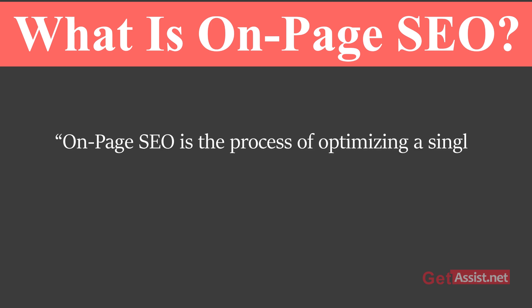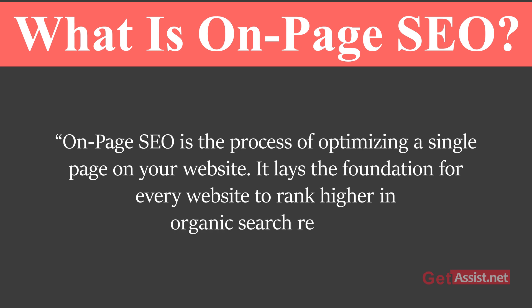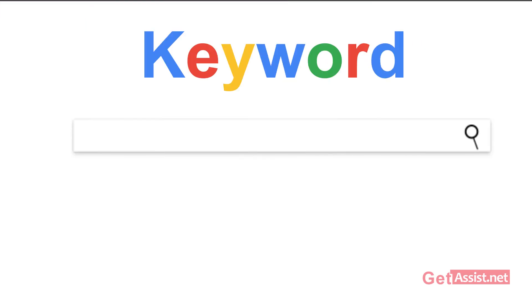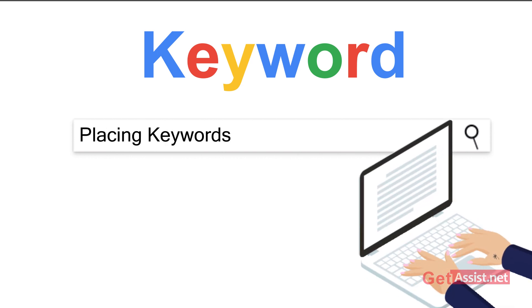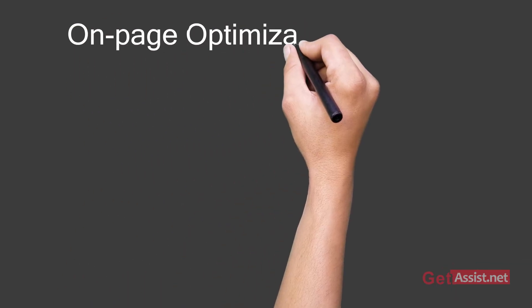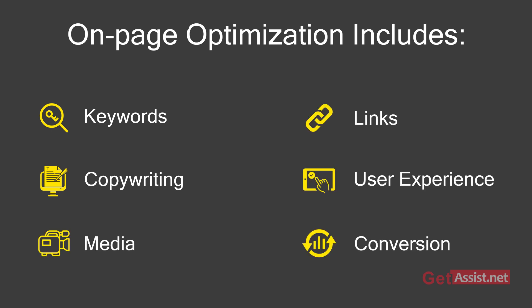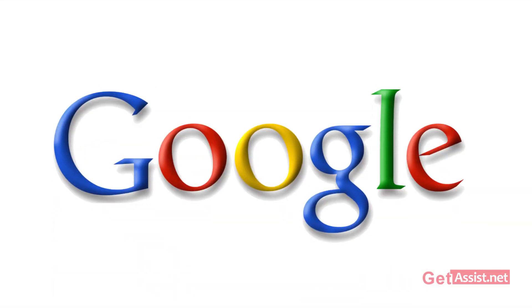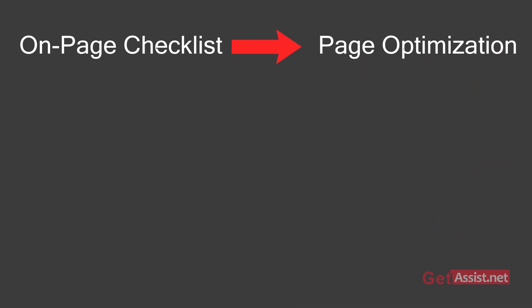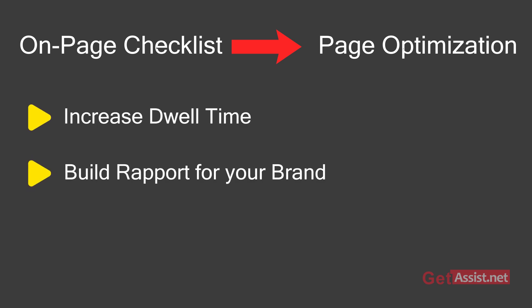Before I directly jump onto the on-page SEO checklist, I'm going to give you a brief overview of what on-page SEO is. On-page SEO is the process of optimizing a single page on your website. It lays the foundation for every website to rank higher in organic search results. Most people relate on-page SEO to just placing keywords on a page — keywords are important, but there is much more to it. On-page optimization mainly includes keywords, copywriting, media, links, user experience, and even conversion. Understanding and executing all these on-page SEO factors is important as it will determine how well your page will rank in Google. This checklist will not only help you optimize your pages but will also help you increase dwell time, build rapport for your brand, and even drive conversions.